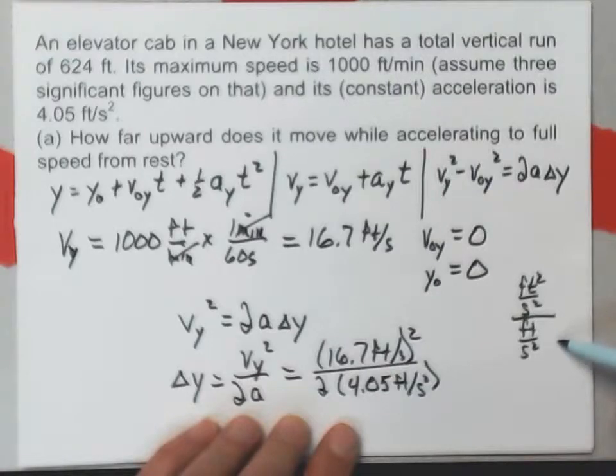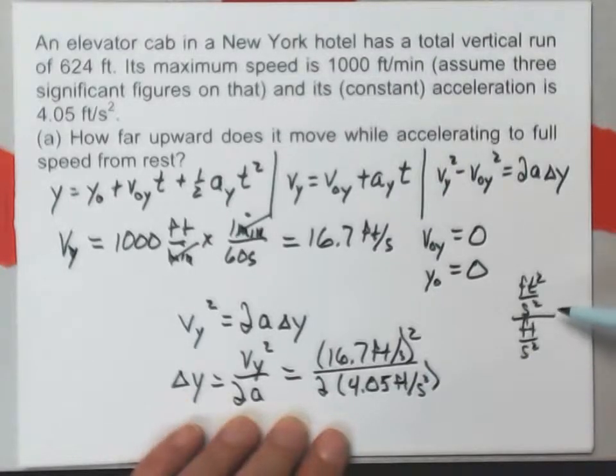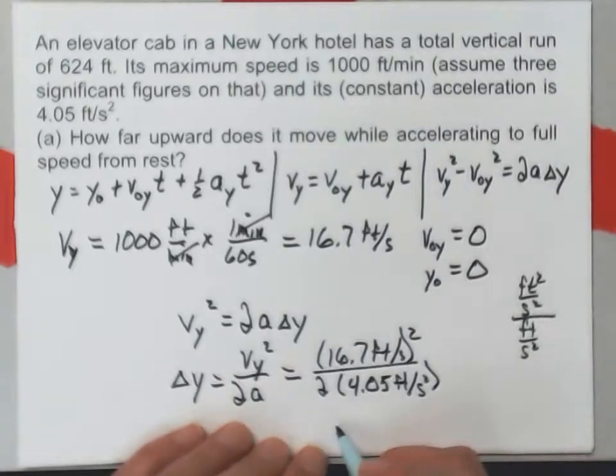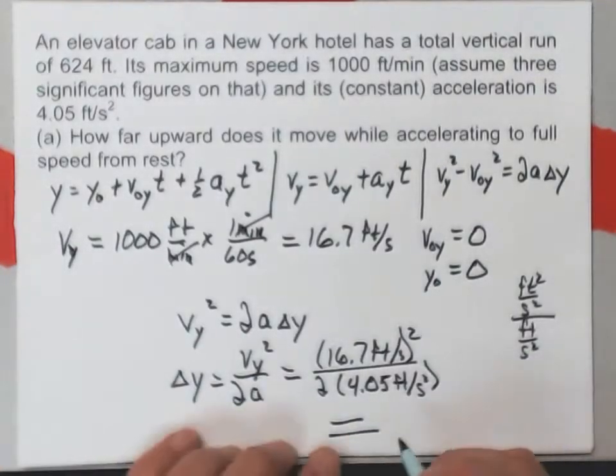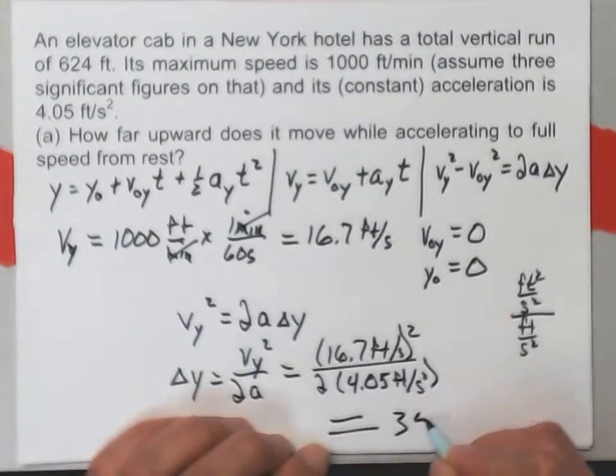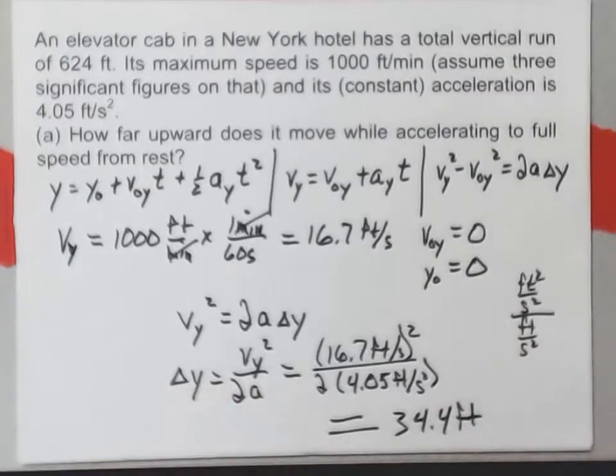And when this is inverted and multiplied by that, because I'm dividing a fraction by a fraction, I'll end up with the second squared dividing out and left with nothing but feet. And when I do this, what I get is 34.4 feet. So there's the answer to part A.